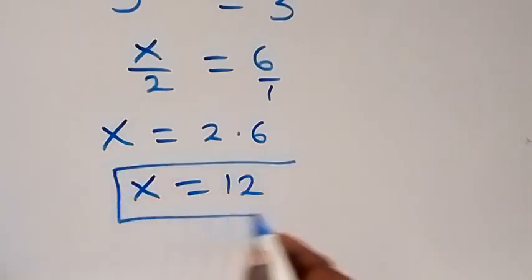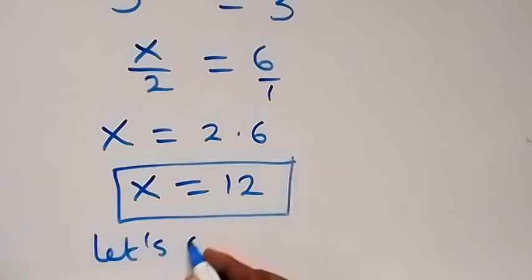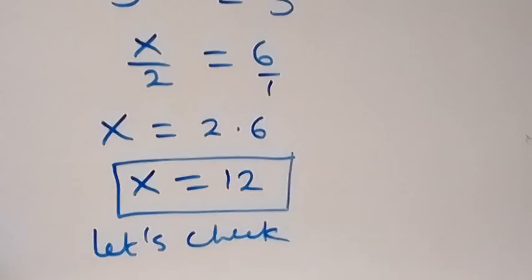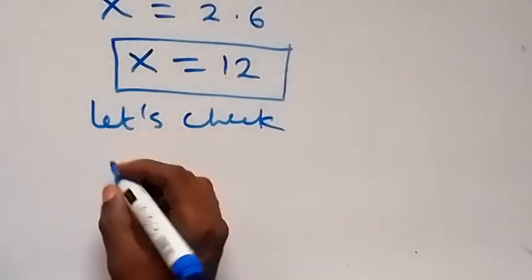So we have the value of x in this problem to be equal to 12. Now let's check — let's verify from what we have. We have square root of 3 raised to power x equals to 27 squared.